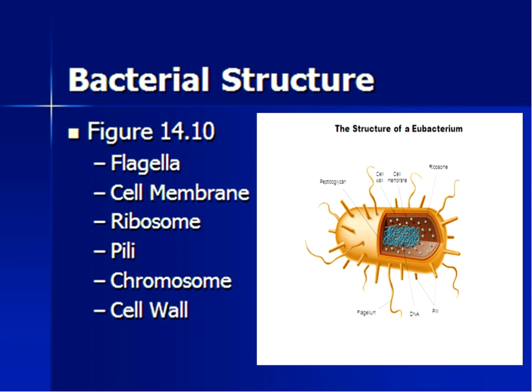Flagella is just the long tail that some of them have. Cell membrane — we know that from the cell, that's just the membrane that surrounds the cell. Ribosomes are the little dots inside the cell that make protein, the really small organelles. Pilli are just extensions of the cell that help it move. Chromosome — that's our DNA found inside bacteria — and then the cell wall as well. So bacteria has both cell wall and cell membrane for most, similar structures to our cell, just actually simpler than our eukaryotic cell.